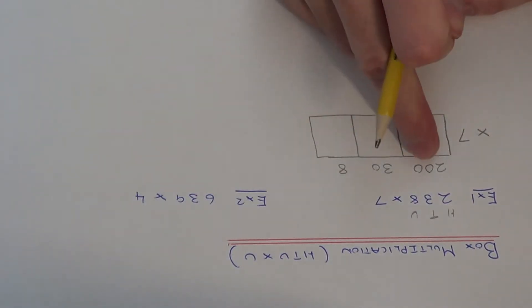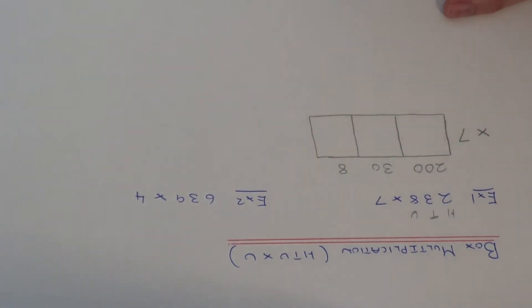So we just now need to work out 200 times 7, 30 times 7, and 8 times 7 and write each answer in the three boxes.